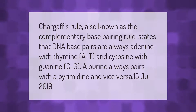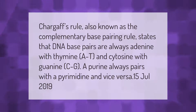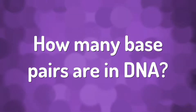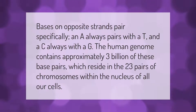Chargaff's rule, also known as the complementary base pairing rule, states that DNA base pairs are always adenine with thymine (A-T) and cytosine with guanine (C-G). A purine always pairs with a pyrimidine and vice versa. Bases on opposite strands pair specifically: A always pairs with T, and C always pairs with G. The human genome contains approximately 3 billion of these base pairs, which reside in the 23 pairs of chromosomes within the nucleus of all our cells.